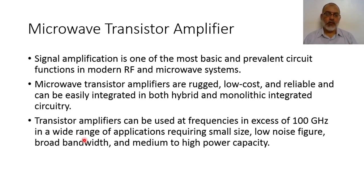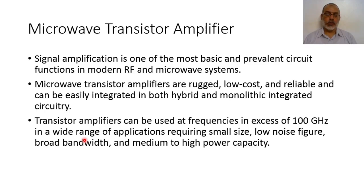From the point of view of high power, microwave tubes are still the optimum solution for high power microwave amplifiers. However, nowadays we can find transistor amplifiers reaching up to 1 kW output. So we can obtain high power microwave amplifiers using transistors. But if we are talking about megawatt levels, we are talking about microwave tubes, not microwave transistors.